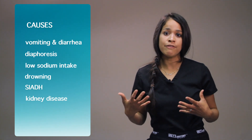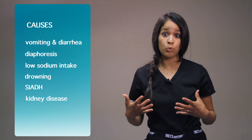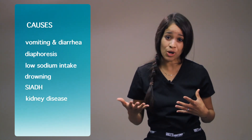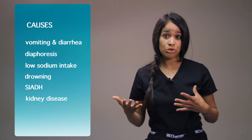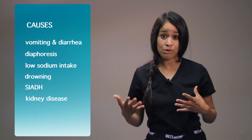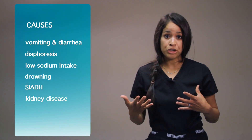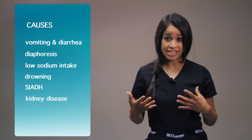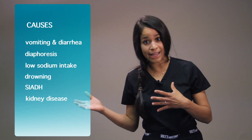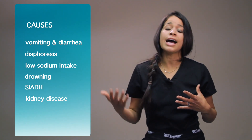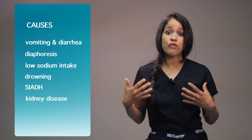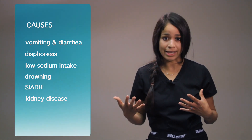Some critical life events that could pose a risk would include drowning or heart failure. Also, SIADH, also known as syndrome of inappropriate antidiuretic hormone. This is when your body retains water instead of eliminating it through urine, so it shifts your electrolyte levels causing hyponatremia. Another contributing factor is kidney disease from a fluid volume imbalance.